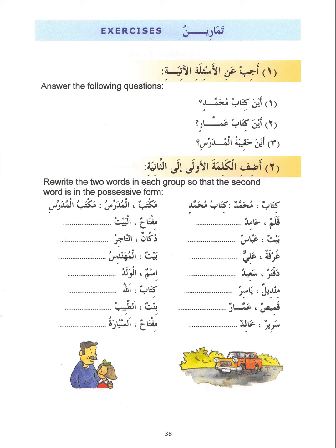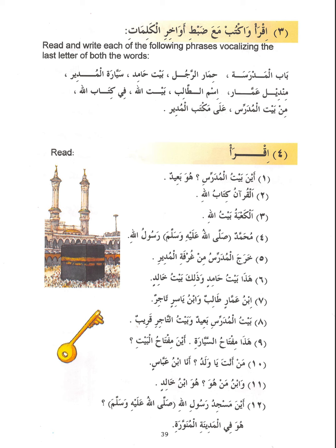Regarding Ism, the hamza here is hamzat al-wasl. When preceded by another word, it is dropped — for example, Ismu al-waladi, Ismu al-binti. In exercise three, you continue reading phrases such as: Babu al-madrasa, Himaru al-rajuli, Baytu Hamidin, Sayyaratu al-mudiiri, Minzilu Ammarin, Ismu al-talibi, Baytu Allahi, Fi Kitabi Allahi, Min bayti al-mudiiri, Ala maktabi al-mudiiri — practicing how to identify the mudhaaf and mudhaafun ilayh.